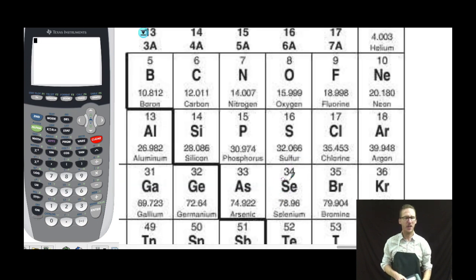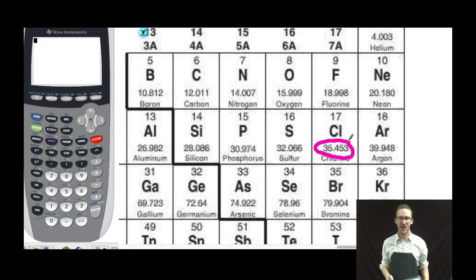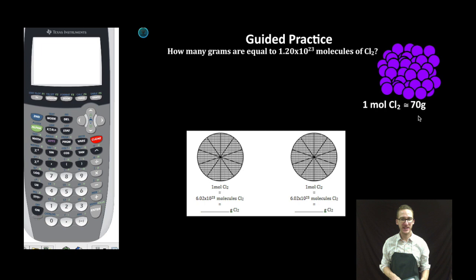Where'd I get that molar mass? The periodic table doesn't say 70. It says 35.453. Why did I put 70? Because it's diatomic. Two moles of chlorine atoms for every one mole of chlorine molecules.